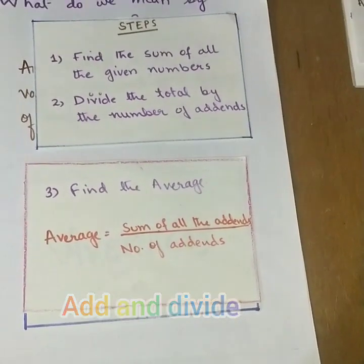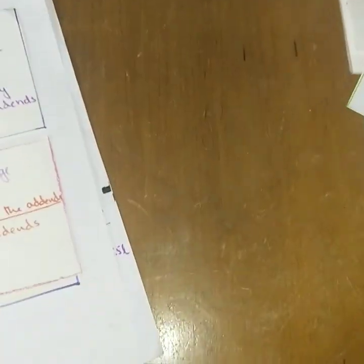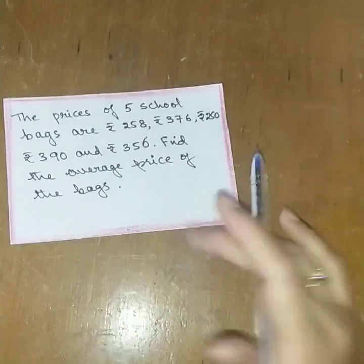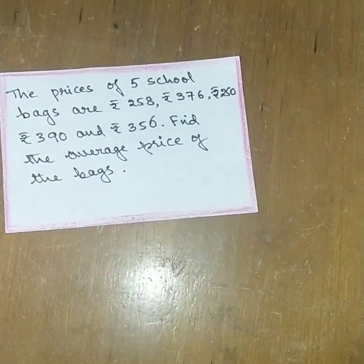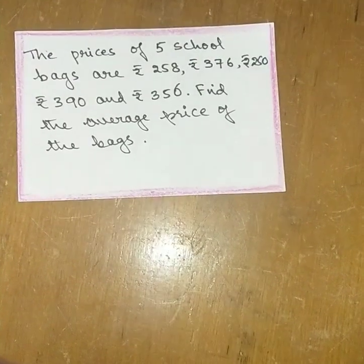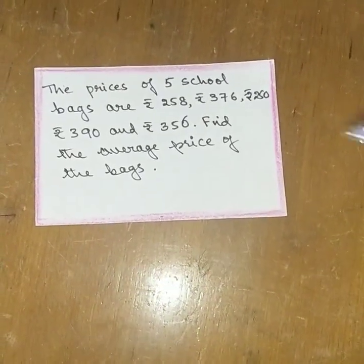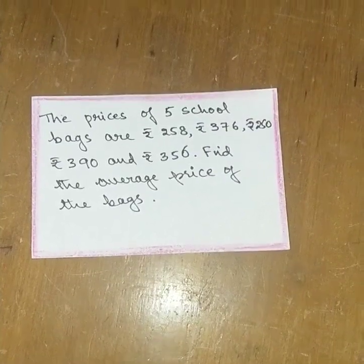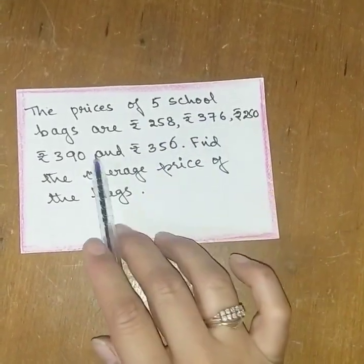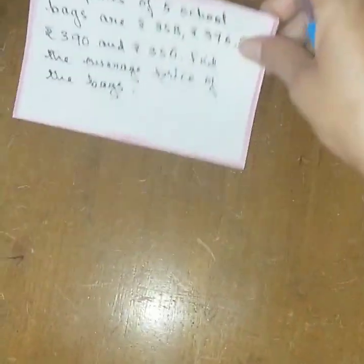This will be more clear with the help of an example. The prices of five school bags are rupees 258, rupees 376, rupees 250, rupees 390, and rupees 356. Find the average price of the bags. There are five bag prices, so we will first add them, then divide by five.